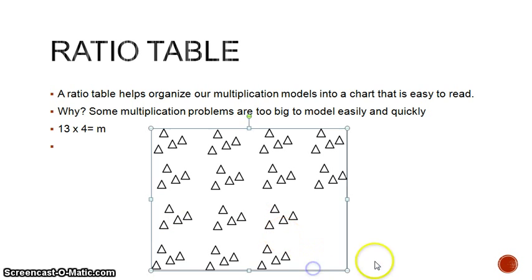If you take a look here, here's a picture of 13 groups of 4. To draw that would take a long time. Can you do it? Yes. Can you do it easily and quickly? Not so much. So when we come across something like this, 13 times 4, we need or we can use a ratio table to help us solve it without having to model it out.